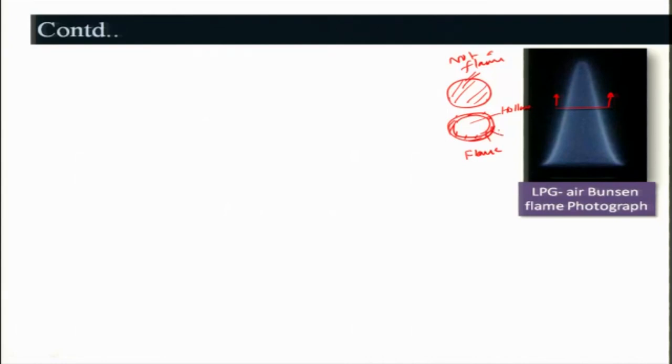Therefore, the flame occurs in a very thin region in which the rapid exothermic reaction takes place. If you look at this thin region, the rapid exothermic reaction takes place and what we call it as a flame. You can call this basically the dark zone - this hollow region - and this is of course the light zone. In this figure, this region is the flame, which is very very sharp.